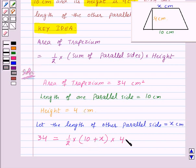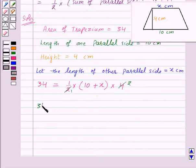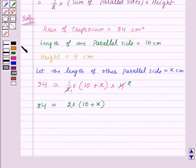Here 2 and 4 will get cancelled by the common factor 2, and we will get 34 equals 2 times (10 plus x), which gives 34 equals 20 plus 2x.